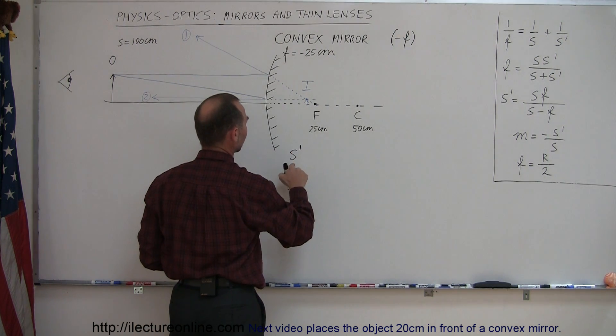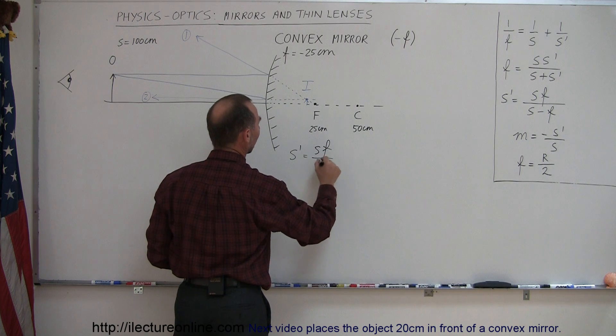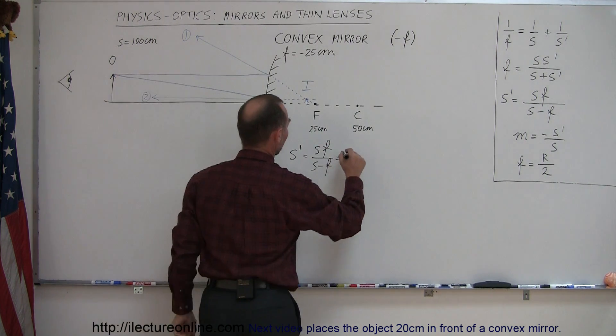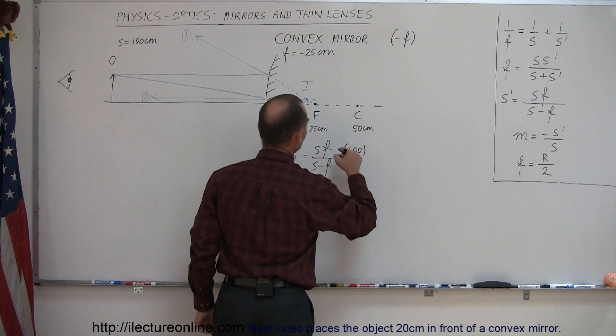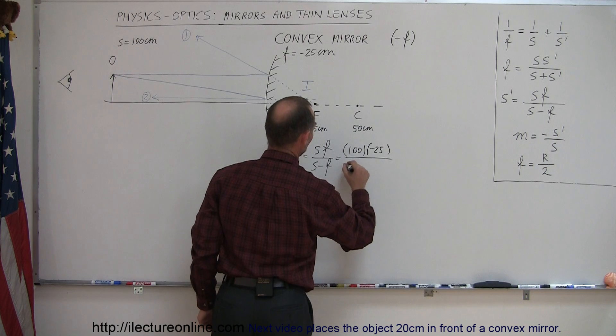So S prime, S prime standing for the image distance, is equal to Sf over S minus F. S is the distance to the object, which was 100 centimeters. The focal length F was minus 25 centimeters, and divide that by 100,